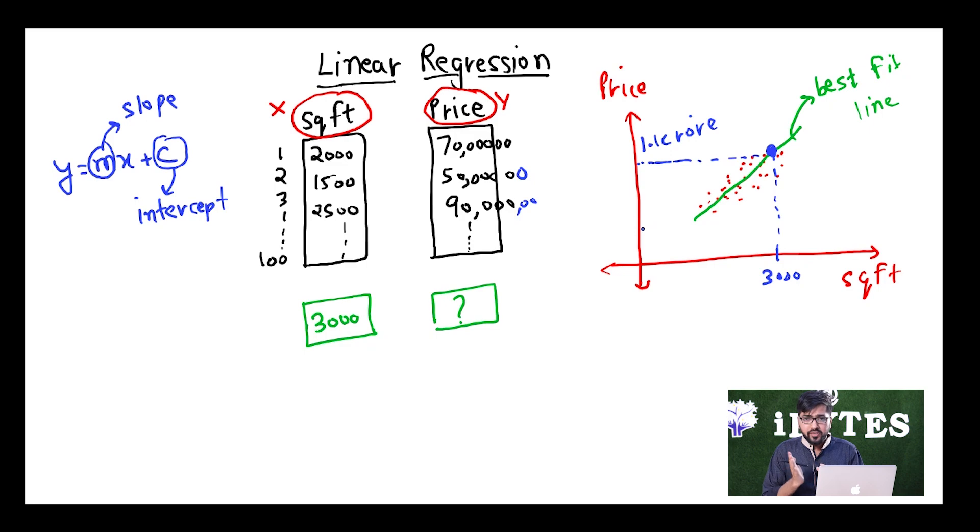Once the line has been made, we don't look at training data anymore. All those 100 points were helpful to make the line and now all the calculations are going to be based on that line. Even if some person comes to me with a value of 2500, I won't be looking at my training data now. I won't be saying my answer is 90 lakh.